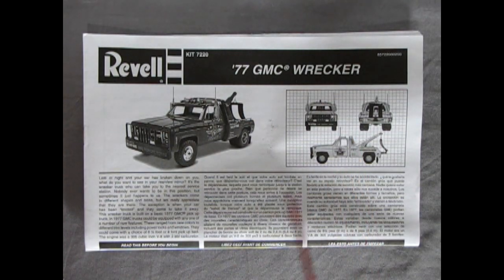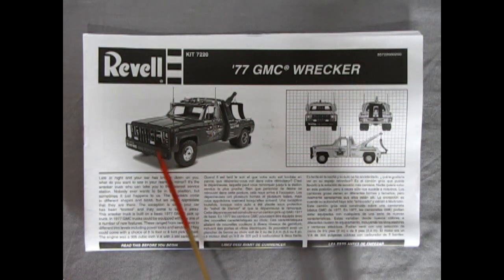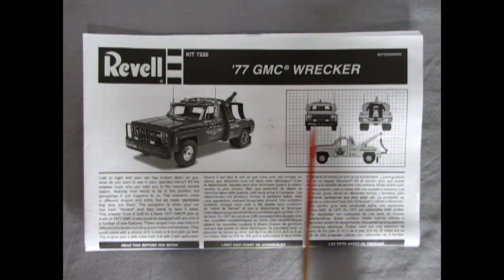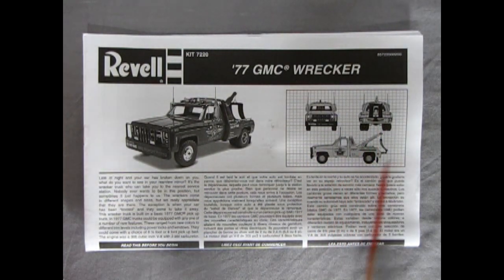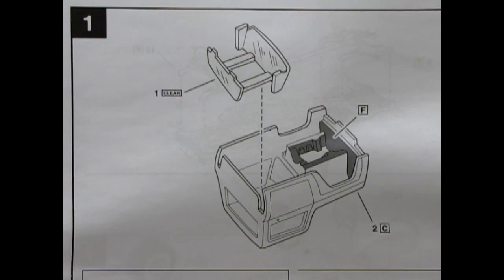Here we have our instruction sheet and as you can see we've got the nice build up of the model in black and white as well as the front, rear, and side view blueprint style on the side. Step one is a little bit unique as it shows our cab getting the inside painted with some semi-gloss black and then our glass going in the top.